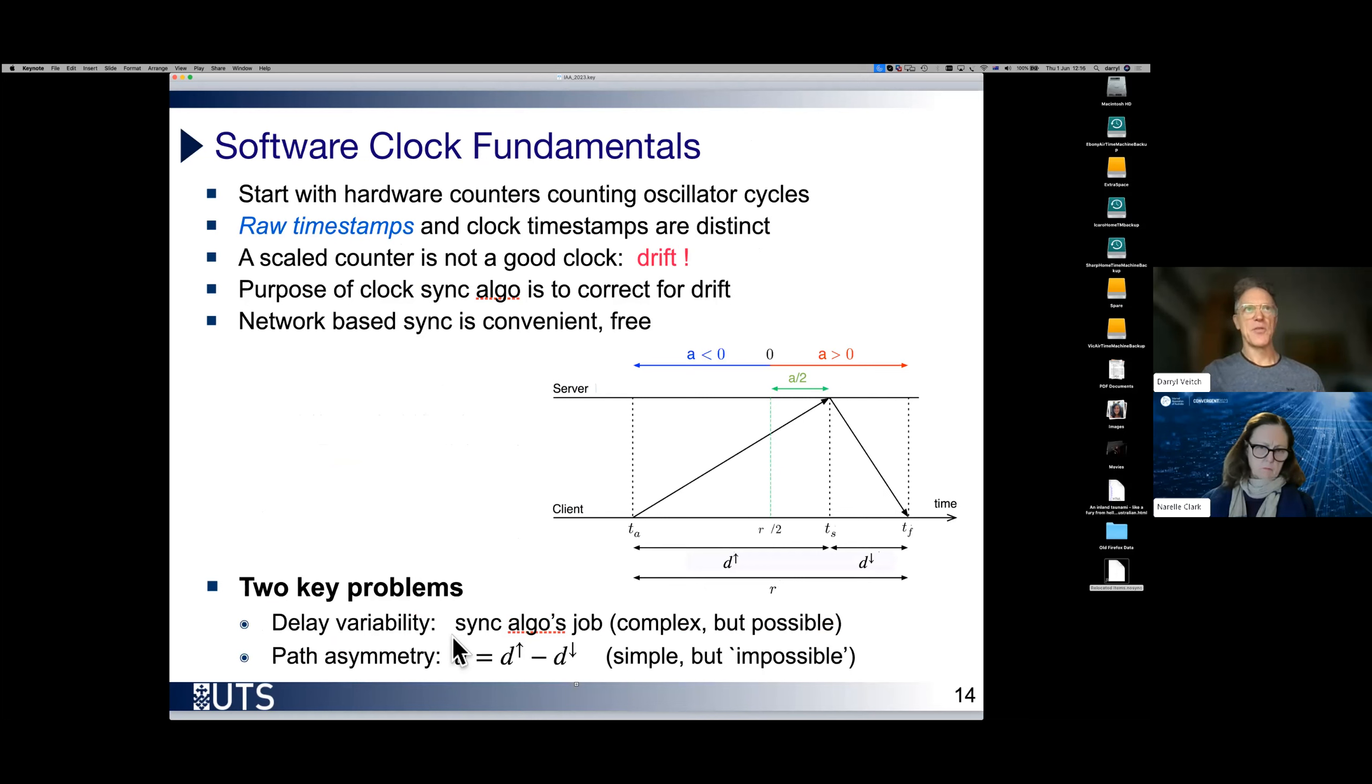Continuing on, just a little bit of preparation on software clock fundamentals. We start off with some local hardware counter, for example, a hardware counter counting oscillations of the hardware oscillator on the motherboard. I've used the term raw timestamp to mean reading that counter. This is an extremely important distinction between that raw timestamp and a timestamp coming from the final clock. Remember the final clock is a complicated construct. It's software. It's subject to all sorts of delays, all sorts of bugs.